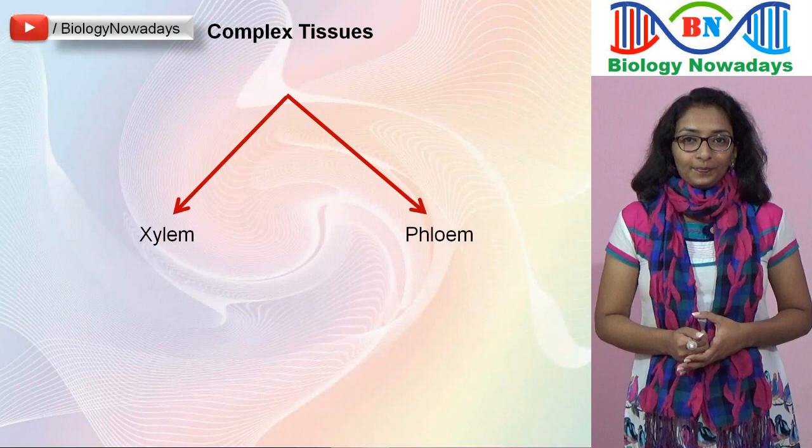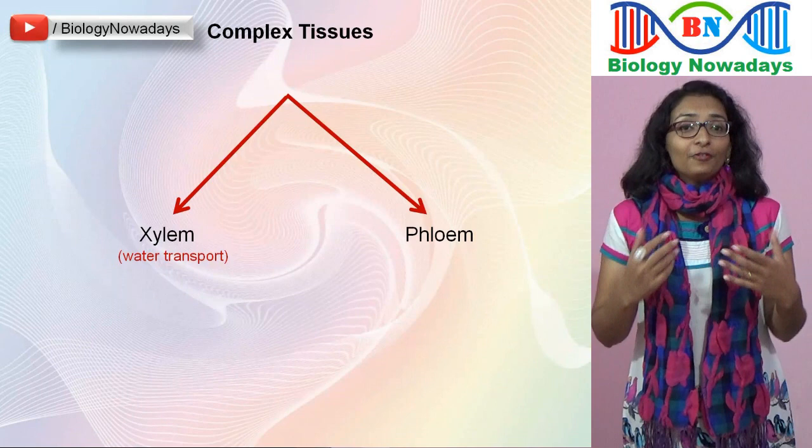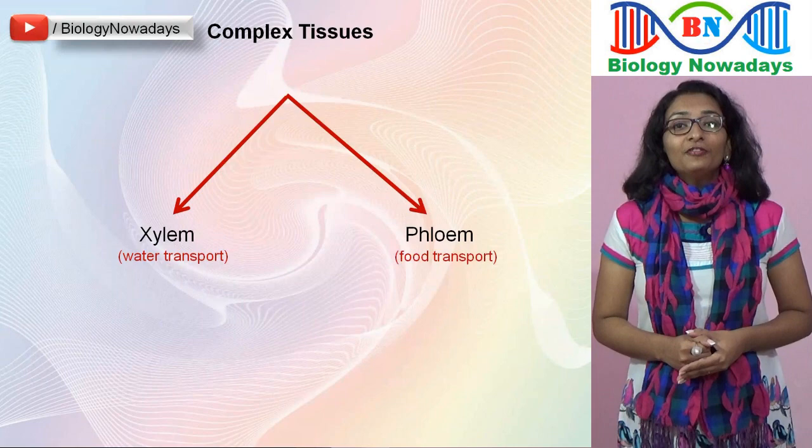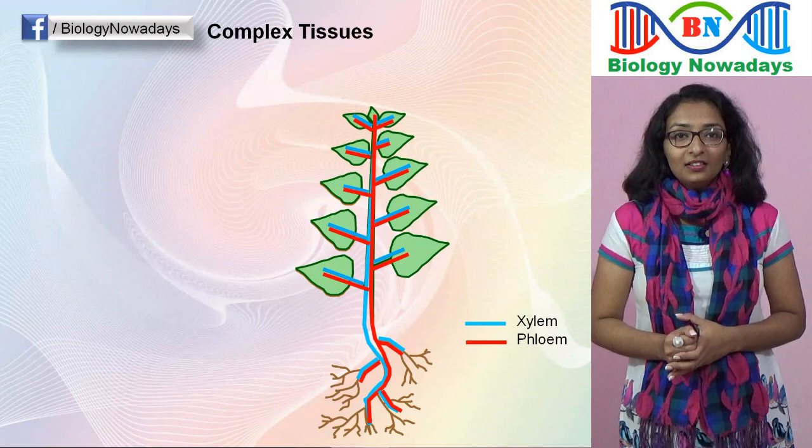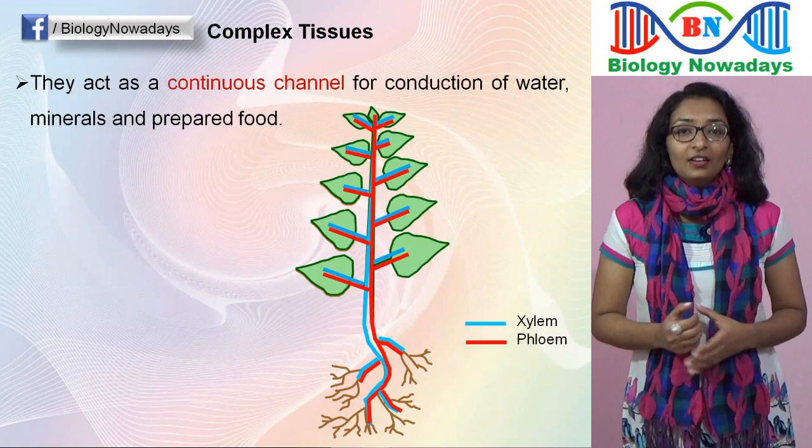Xylem tissue is specialized for water transport, whereas phloem tissue is specialized for food transport. Xylem and phloem are found in almost all parts of the vascular plants. These tissues form a continuous system that spreads in roots, leaves, stems, etc., and act as a continuous channel for the conduction of water, mineral elements and prepared food.